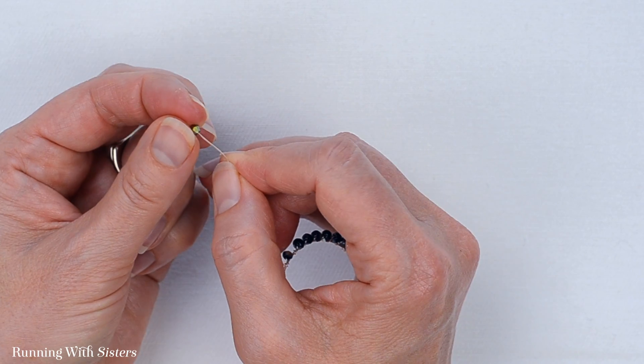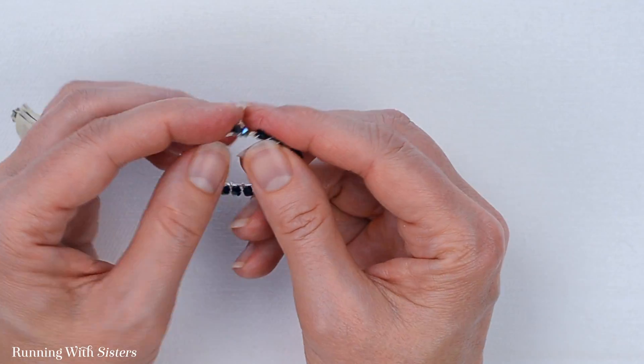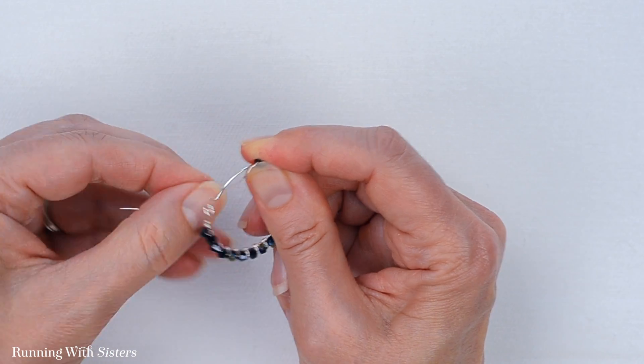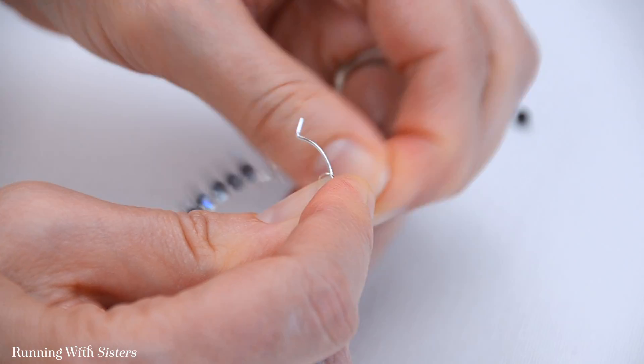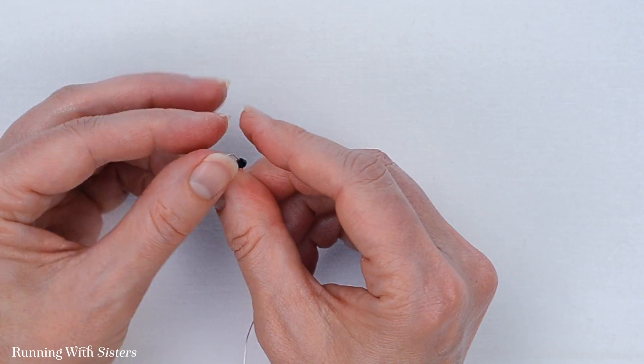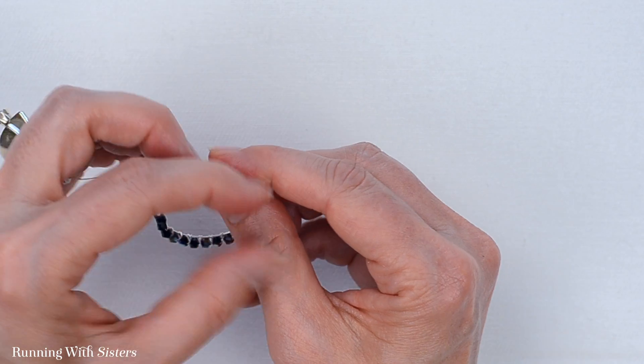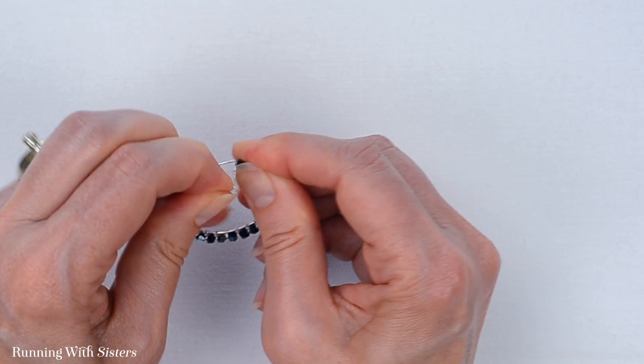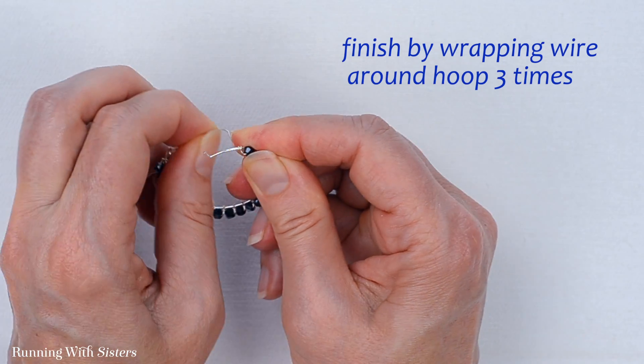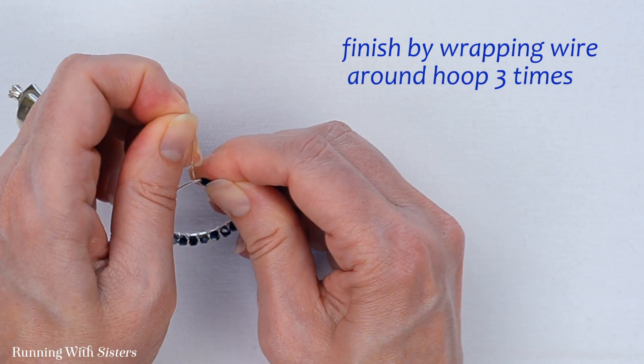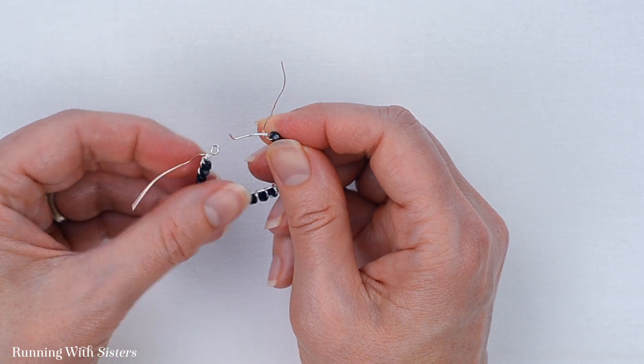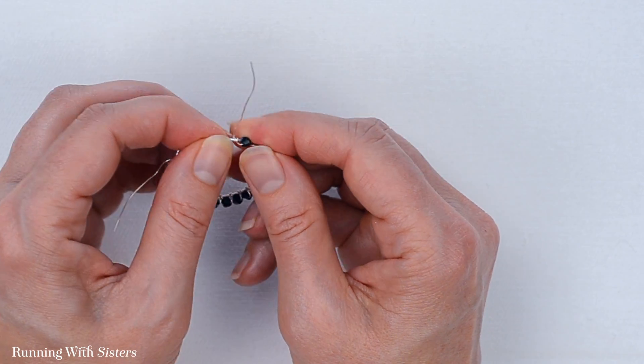I just have two more beads to feed on here. It gets easier as you get closer to the end. One, two. Slide on my last bead. I'm going to go one, two. I'm actually going to do one more wrap just like we did at the beginning so that there are three wire wraps at each end. That'll just make it look symmetrical and also make them extra secure.